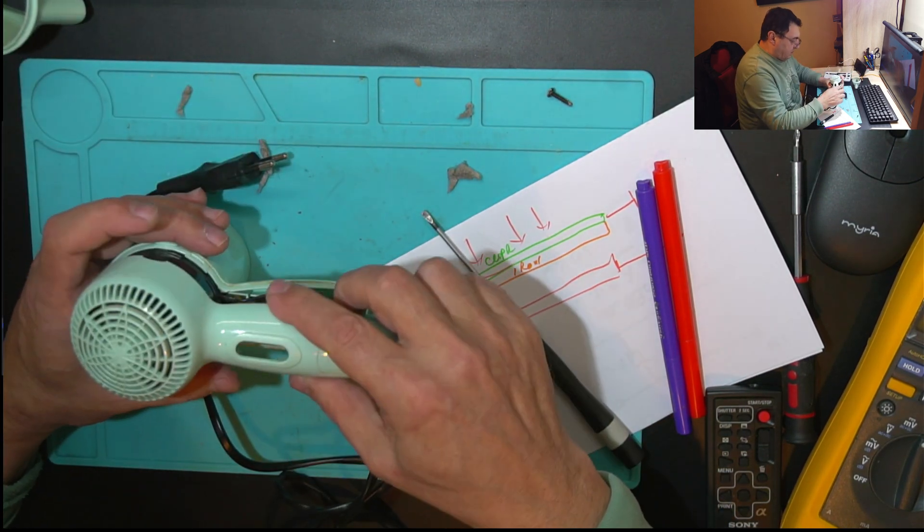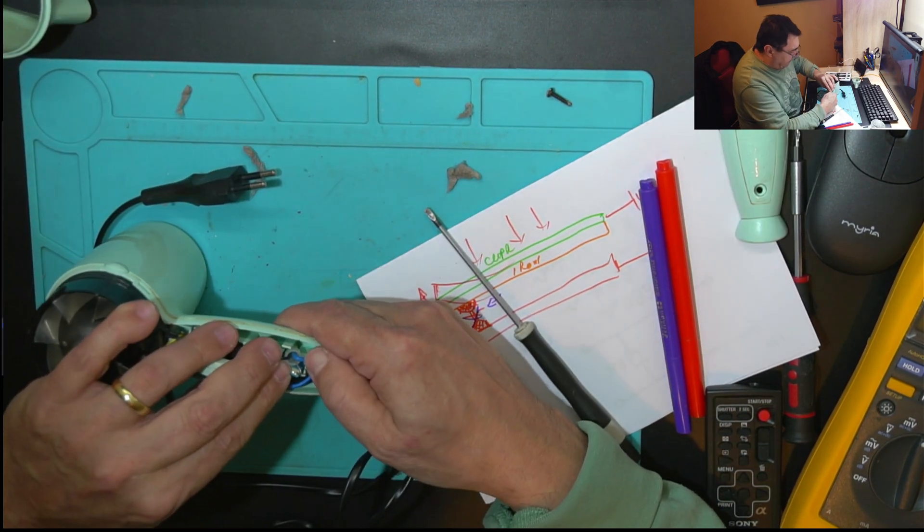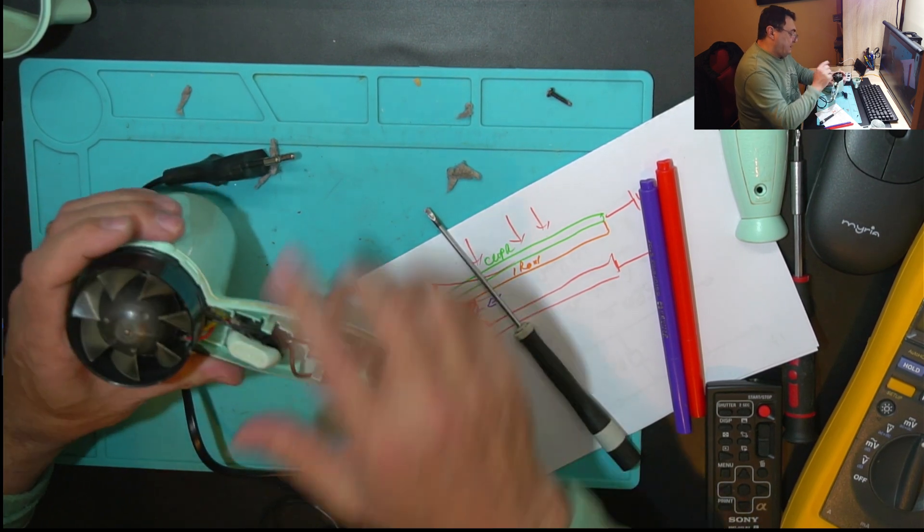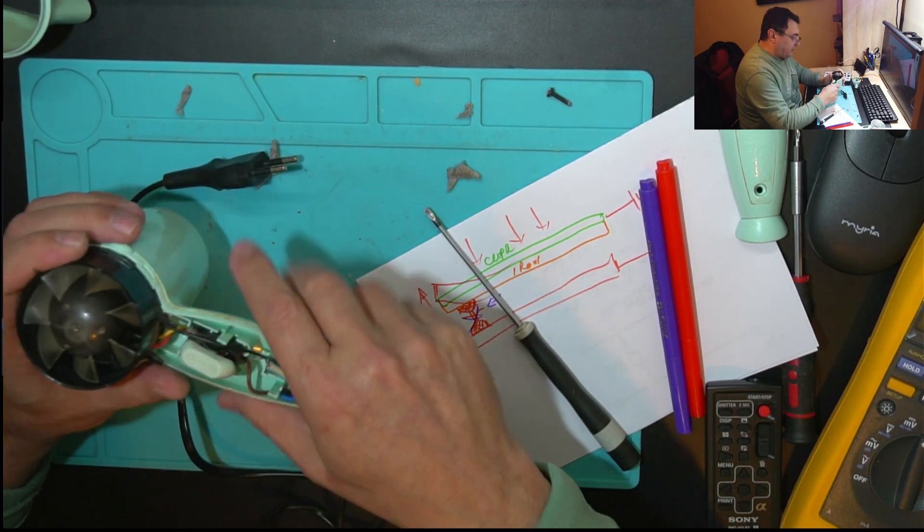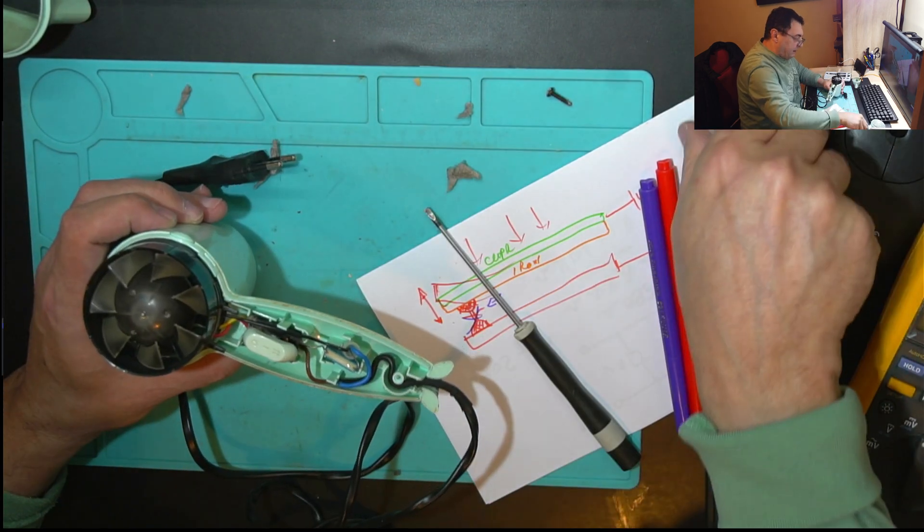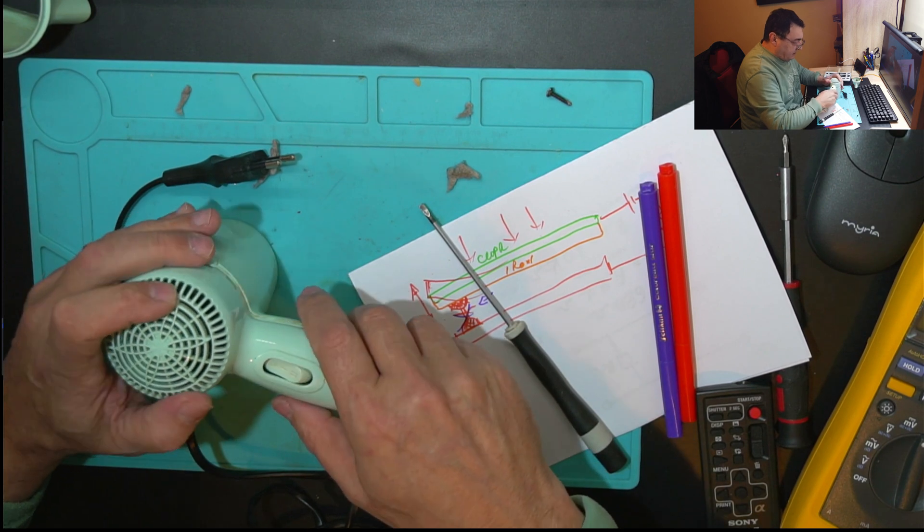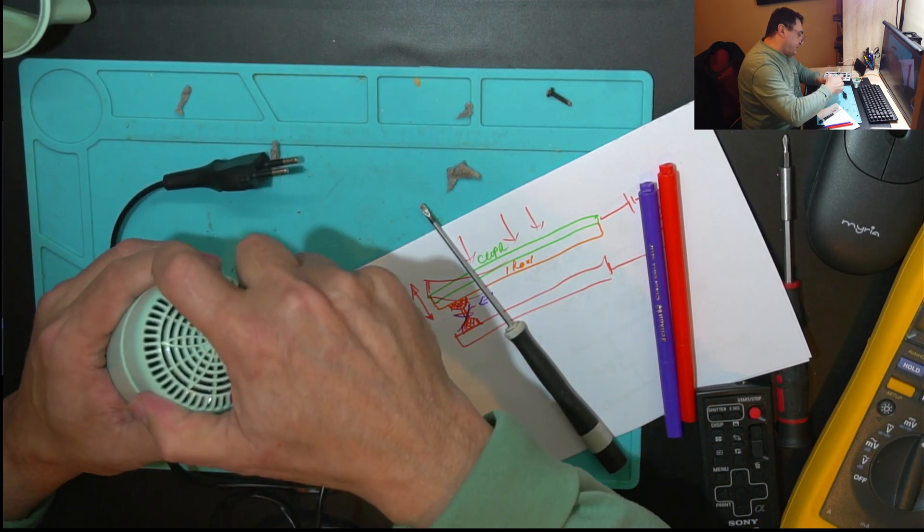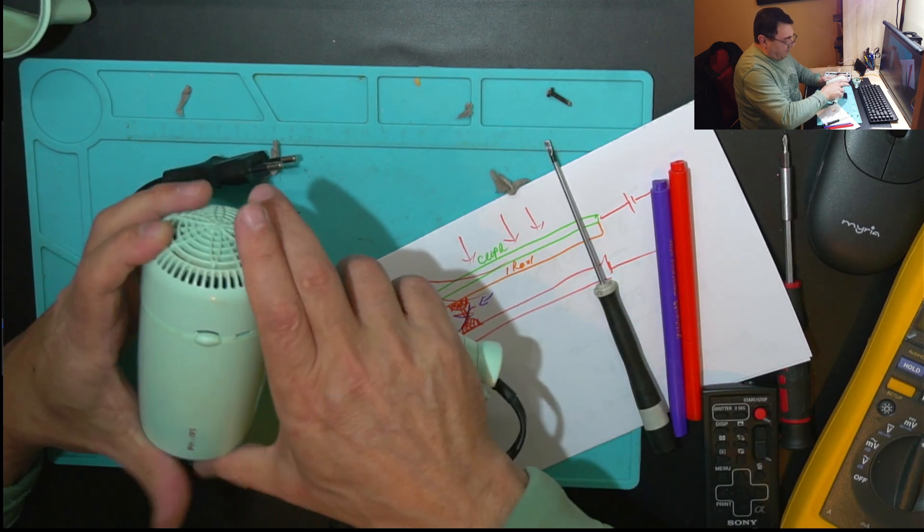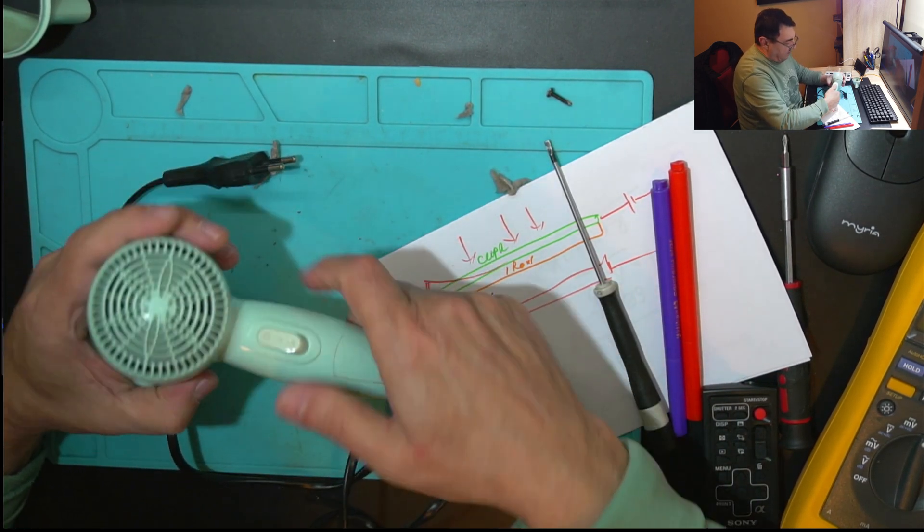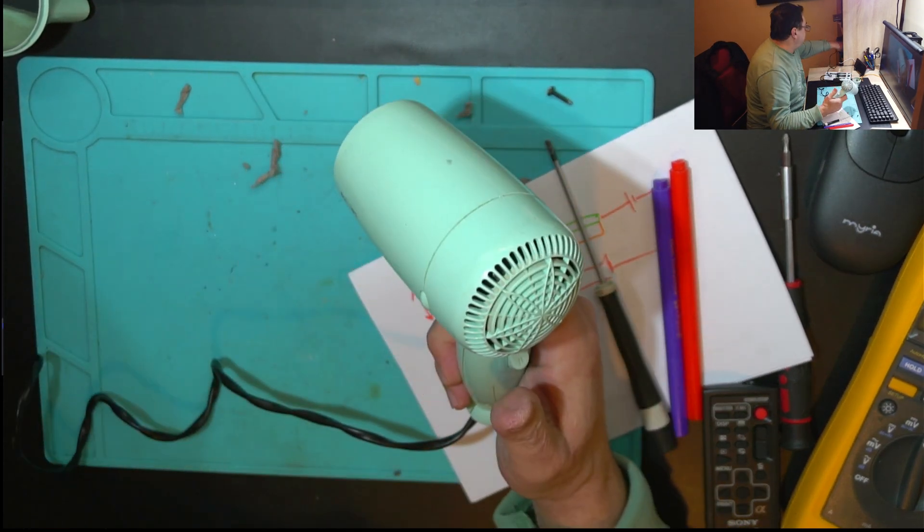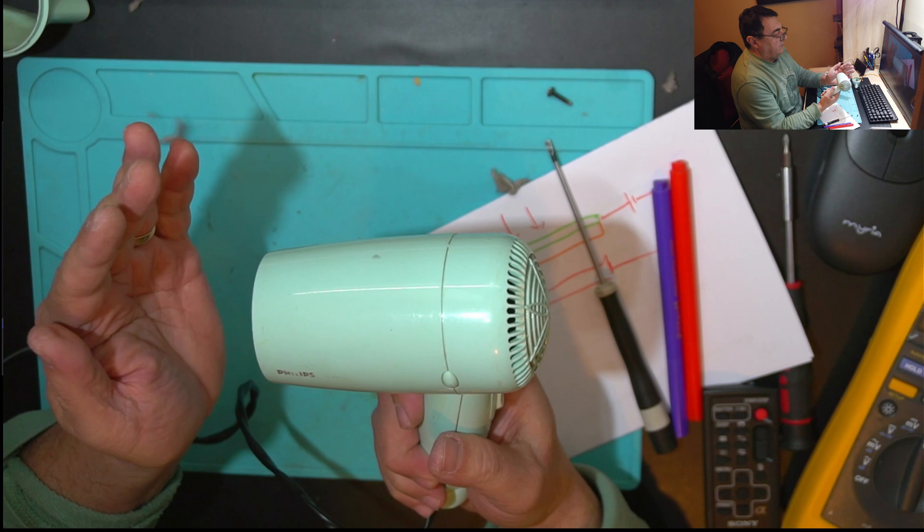By the way, the capacitor is not for helping the motor moving. Because this is a DC motor, so it doesn't need any capacitor. But it's for cutting the interferences, you know, generated by the sparks into the brushes inside the motor. And there we go. This is running. Good.